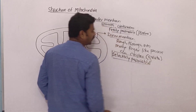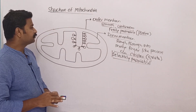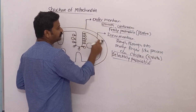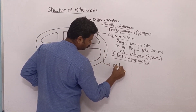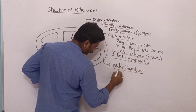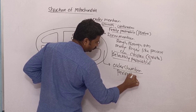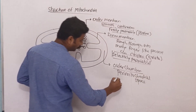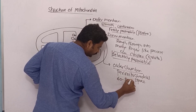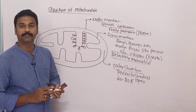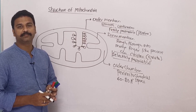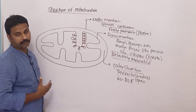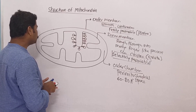The space between the two membranes is called the outer chamber, also called the perimitochondrial space. This space has a diameter of 60 to 80 angstroms and it is the site where protons get concentrated during the process of oxidative phosphorylation.